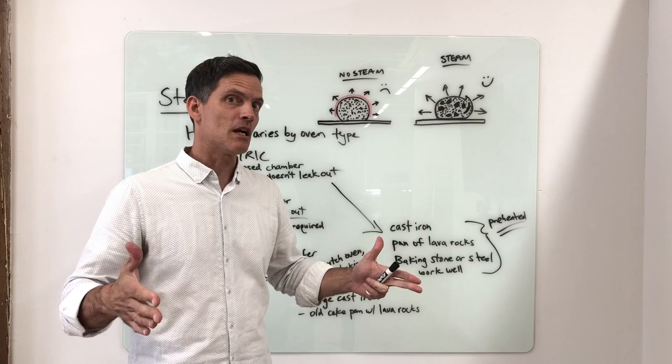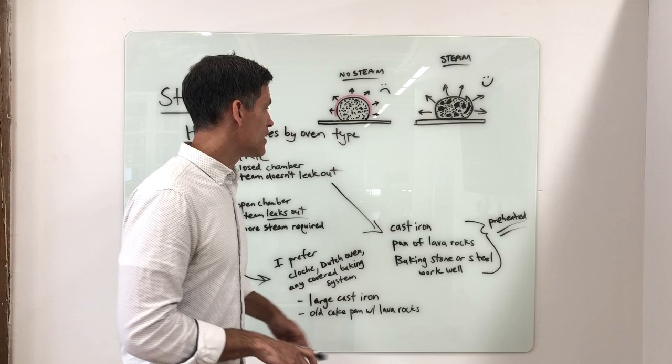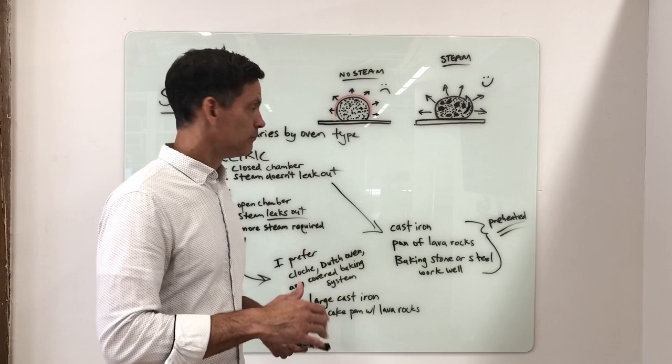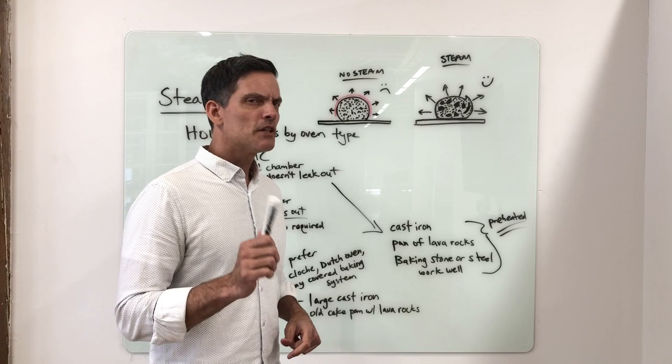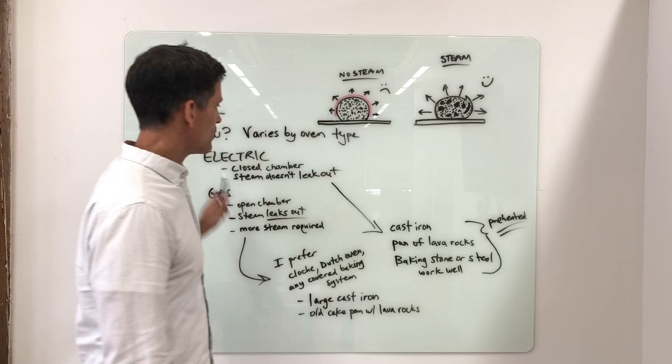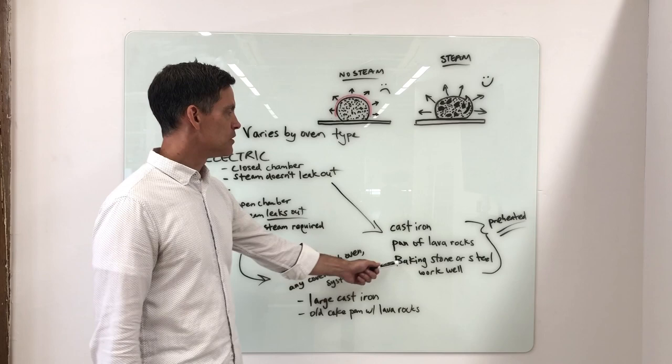Right before you bake, you pour water on them. When we get to baking today, I'll talk about safety a little bit, but for right now I'll skip that. So electric oven, you can use a cast iron pan to steam or a pan of lava rocks, and make sure your baking stone or baking steel is preheated.